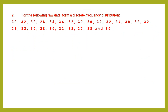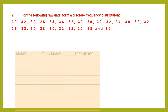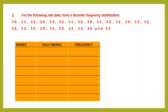Question 2: for the following raw data, we have to form a discrete frequency distribution table. Raw data is data that you get as you observe things — whatever data you collect, you write it down. Raw data has to be arranged and organized. The first step to form the table is to draw a table with three columns: marks, tally marks, and frequency. The first column title depends on your question, but the second and third columns will remain the same.